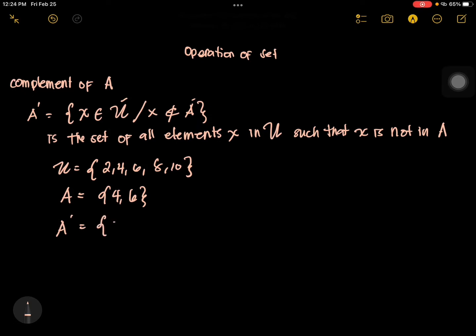Our answer is {2, 8, 10}, since 2, 8, and 10 are elements of the universal set and are not elements of set A. So we cancel 4 and 6, and what is left — 2, 8, 10 — is our answer.